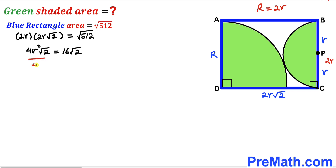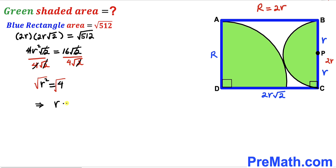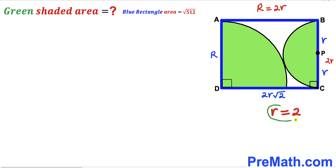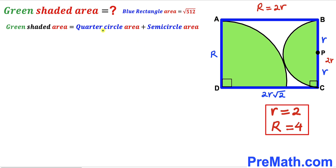Dividing both sides by 4√2, the √2 and factor of 4 cancel, giving r² = 4. Taking the square root, lowercase r equals 2 units. Therefore, uppercase R equals 2 times lowercase r, so uppercase R is 4 units.